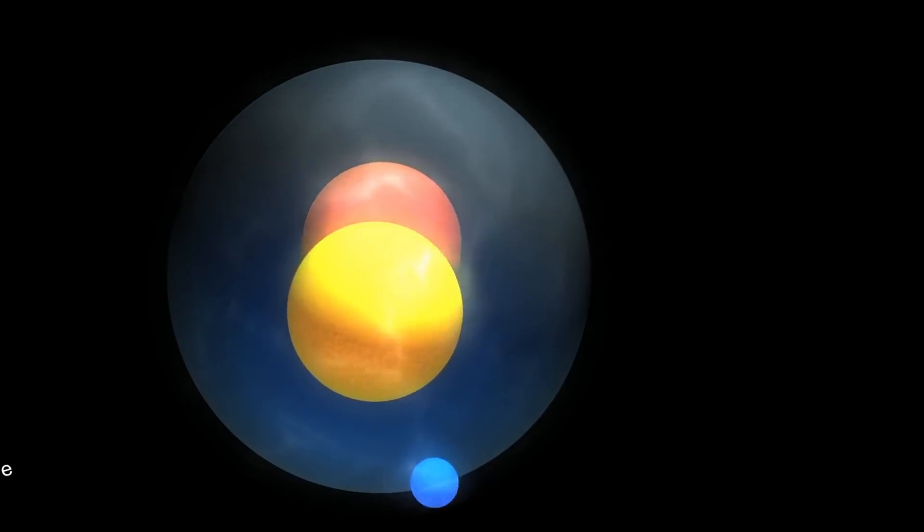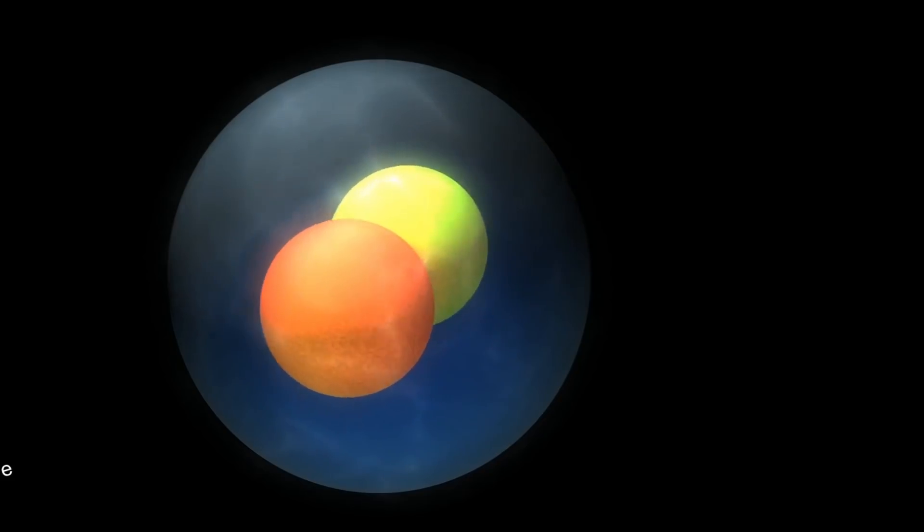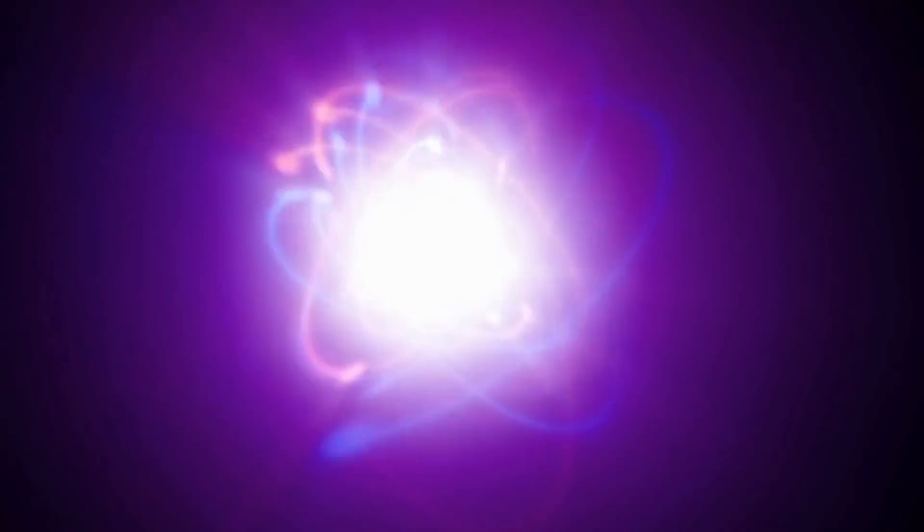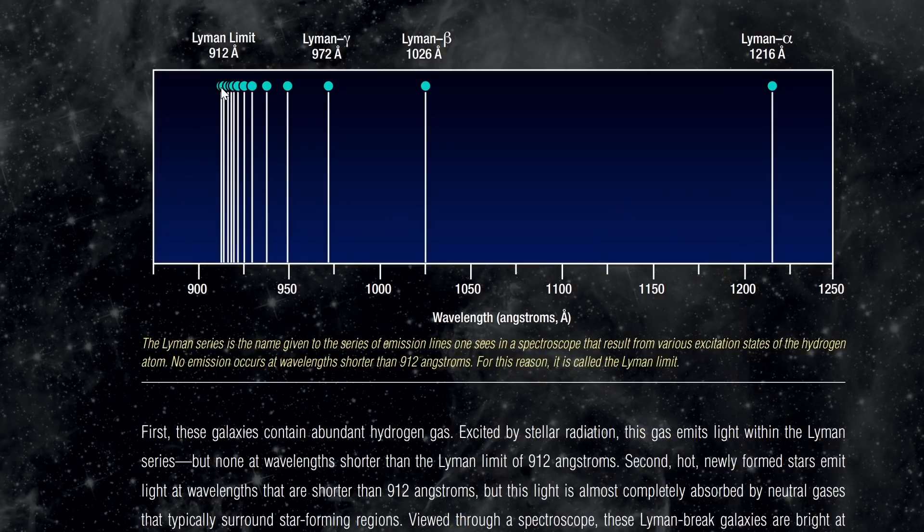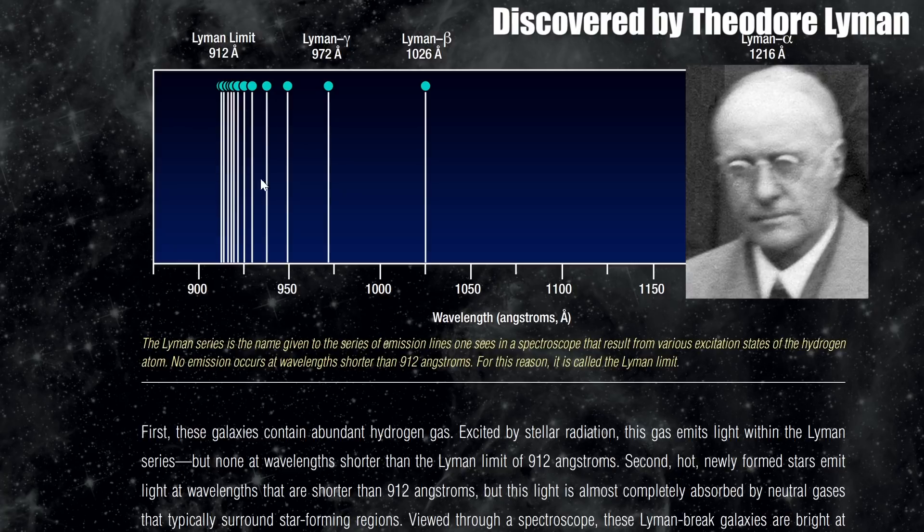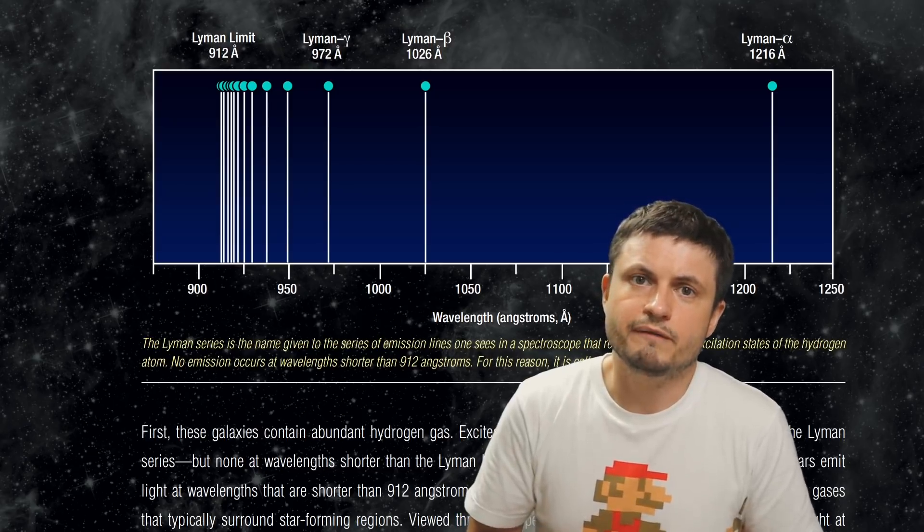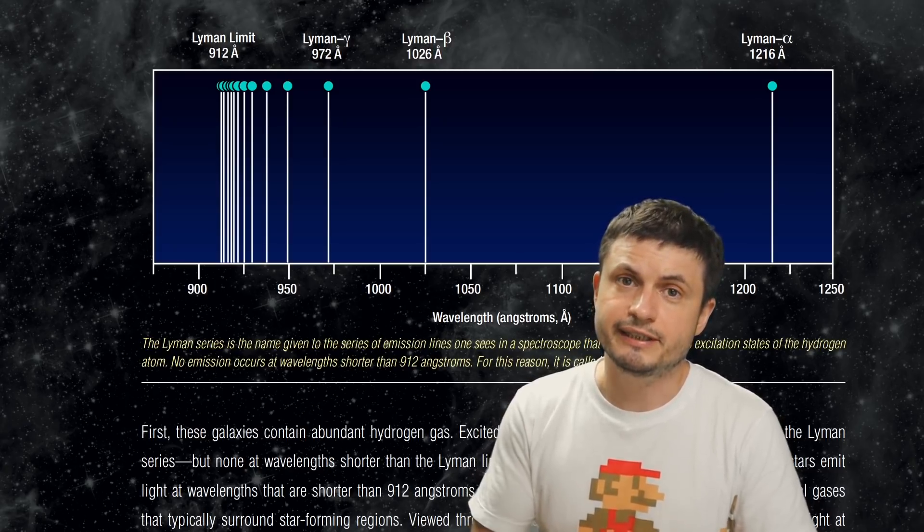When excited hydrogen atom starts to cool down, it emits ultraviolet light at very specific frequencies that are directly related to the energy levels of the electrons inside the atom itself. Today we refer to these as Lyman lines, with the lines themselves forming something that looks like this. Now this wavelength is in a unit known as angstrom, but it can also be obviously converted into nanometers.